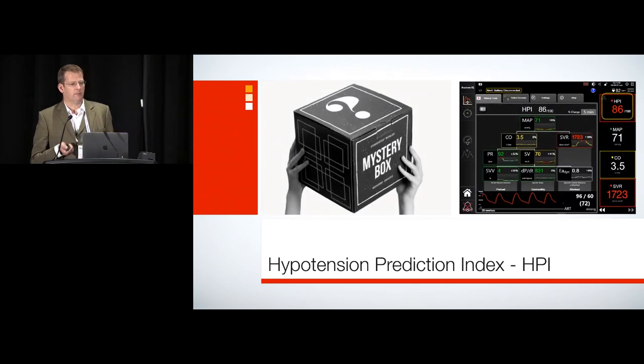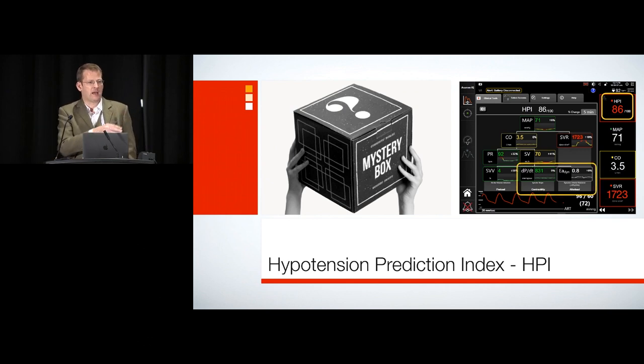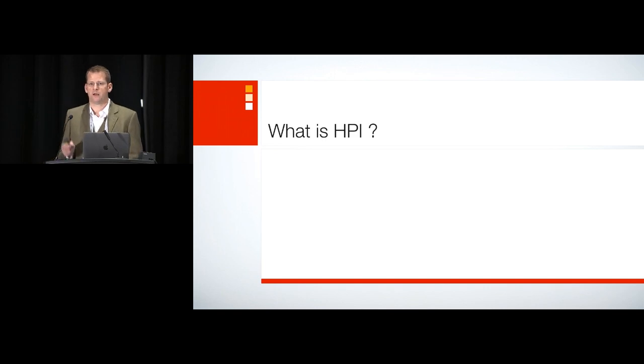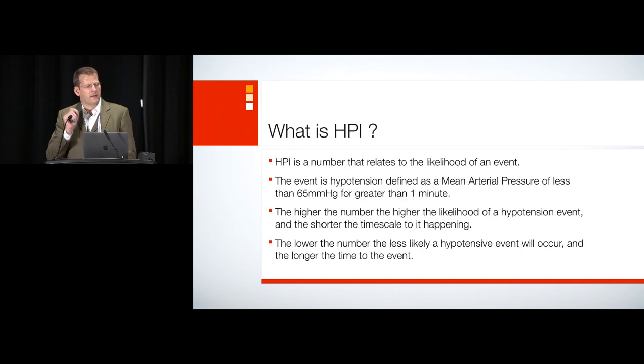What you end up with is a number, and that's HPI there. You also get some additional parameters as well. We won't go to those today. Maybe we can talk about them in the discussion later on, looking at measures of contractility peripherally and also whether you're pressure responsive. That's EA-dyne. But it's a number, HPI, that relates to an event. So the event currently is defined. It's fixed. Its mean arterial pressure less than 65 for more than one minute. The higher the number, the more likely you are to be hypotensive. It occurs in a short duration. The lower the number, the less likely you are to be hypotensive. And if it does occur, it will be much, much further forward in the future.